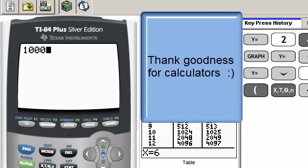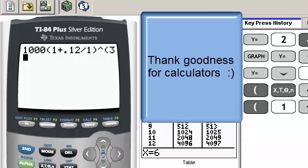So I will type in my problem. I will have 1,000 times 1 plus, and it's 0.12 divided by 1, close those parentheses. Now my calculator does know to divide before it adds this. And that is raised to the, and of course, I could just say 3 or 1 times 3, but make sure if it's 1 times the 3, put it in parentheses.